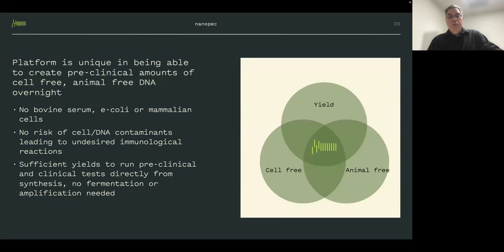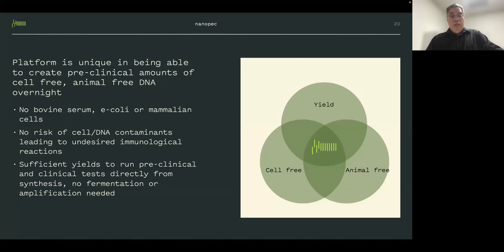More important than IP protection is the ability to create preclinical amounts of cell-free, animal-free DNA. That means no bovine serum — used for mammalian cells — and no E. coli fermentation, which is the traditional means for plasmid amplification. There is no need for plasmids, and therefore no risk of cell DNA and protein contaminants that can lead to undesired immunological reactions in preclinical trials. We have sufficient yields to run preclinical and clinical tests directly from synthesis — no fermentation or amplification needed.